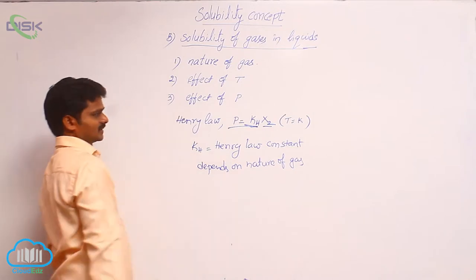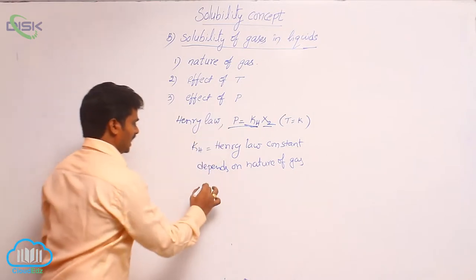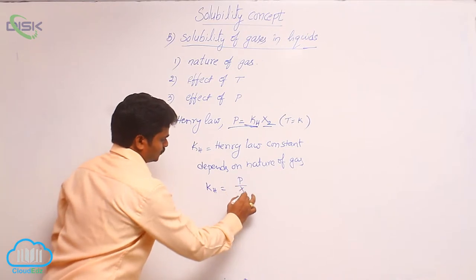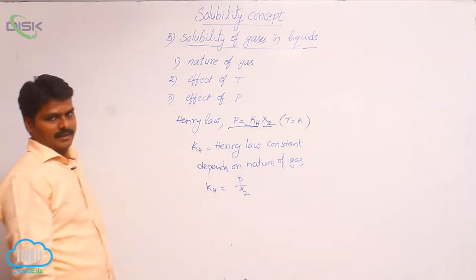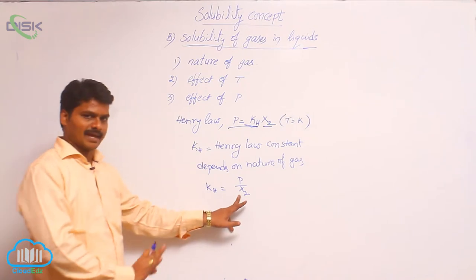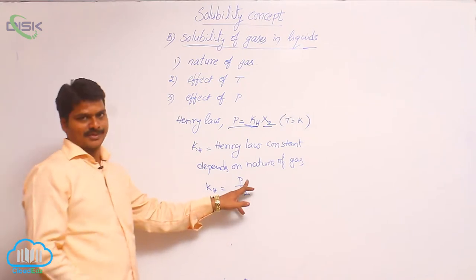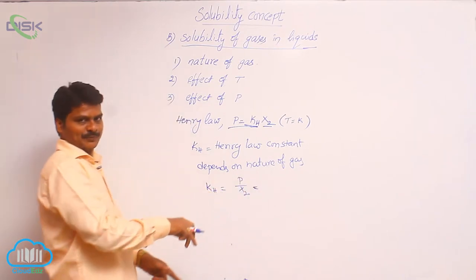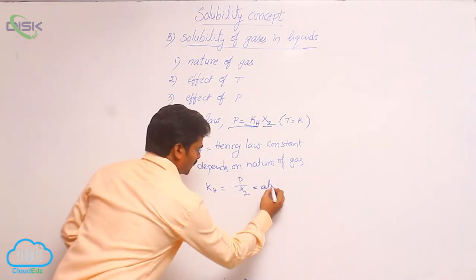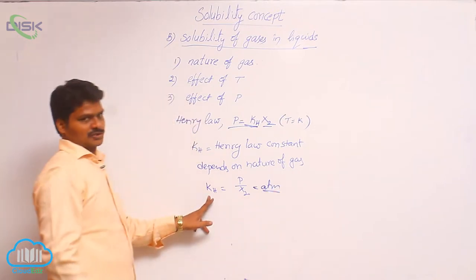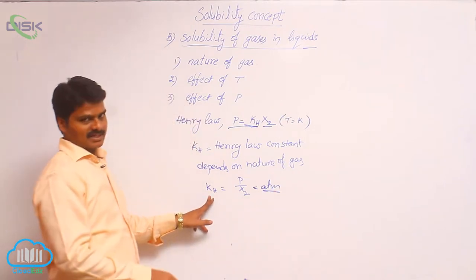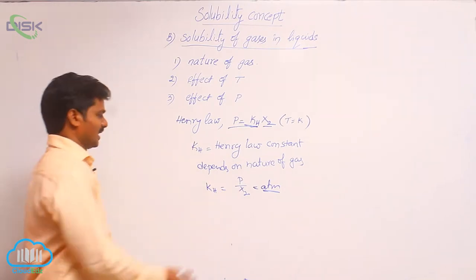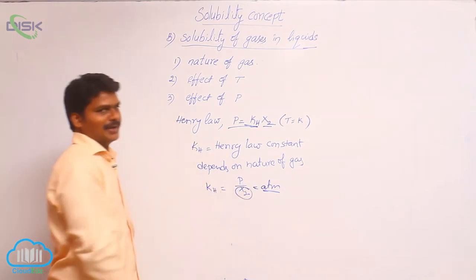What are the units of Kh? We have Kh equals p divided by x₂. Since mole fraction has no units and only pressure has units, if pressure is expressed in atmospheres, then atmosphere is the unit of Kh. So the units of Kh are the units of pressure, because mole fraction has no units.